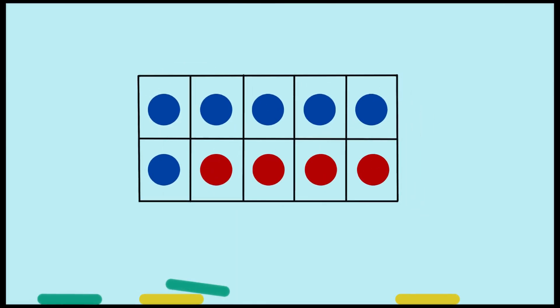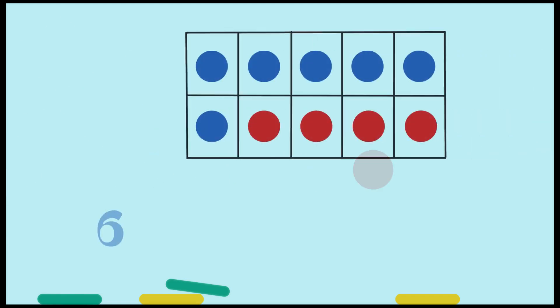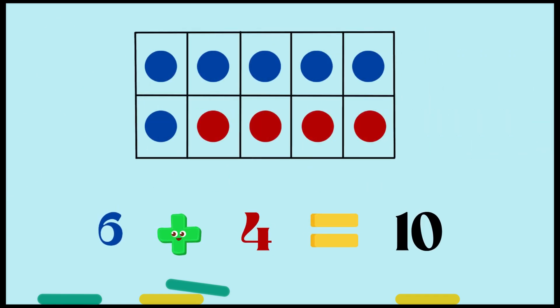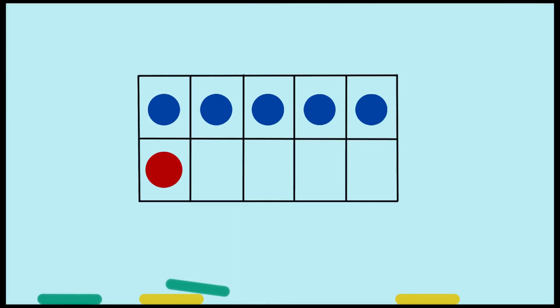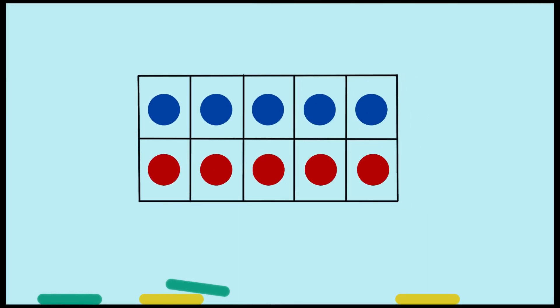Next up — six blue dots and four red dots. As you can see in the frame, there are six blue dots and four red dots, and this number sentence is six plus four which equals 10. So six and four equal 10.